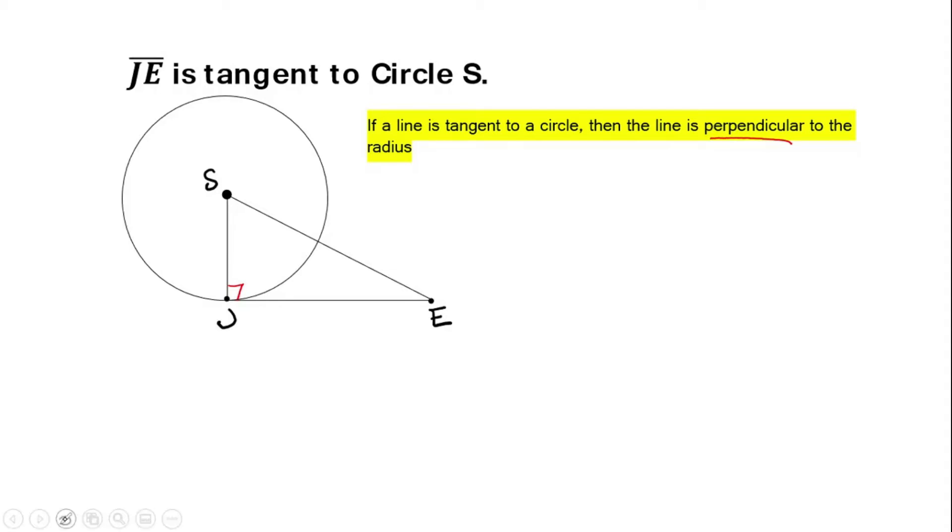That just means that the radius and the tangent line are going to always create a 90 degree angle. So let me give you an example where we'll use this theorem.